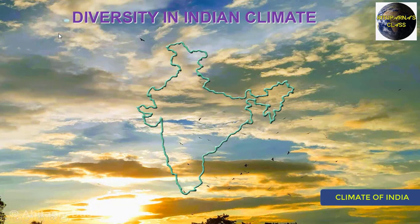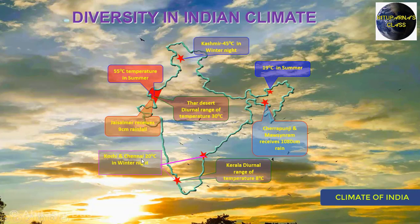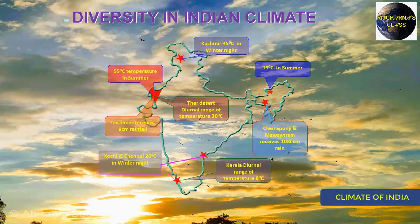Now we are going to discuss the diversity in Indian climate. During winter, the temperature of Kashmir is minus 45 degrees centigrade, but in the southern portions — Kochi and Chennai — the winter temperature is 20 degrees centigrade. The diurnal range of temperature is also variable from place to place. In Kerala, the diurnal range is only 8 degrees centigrade, but in the Thar Desert, the diurnal range of temperature is 30 degrees centigrade.